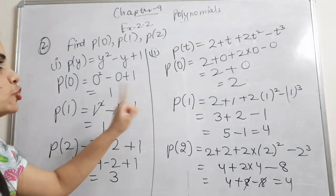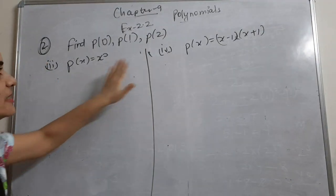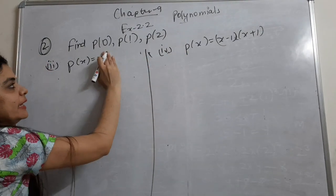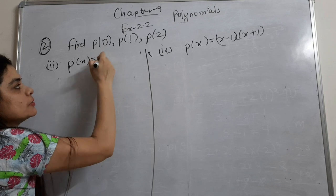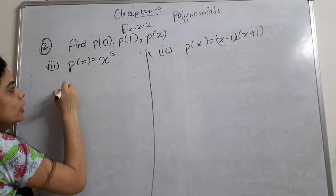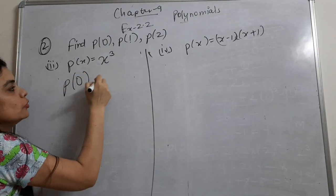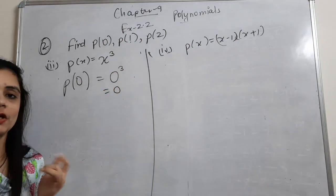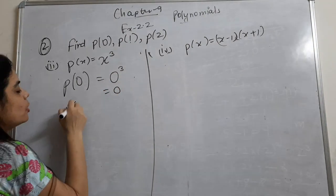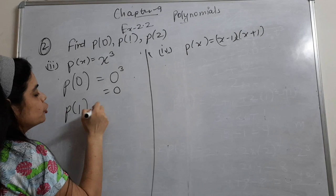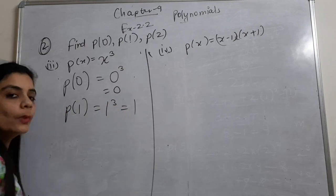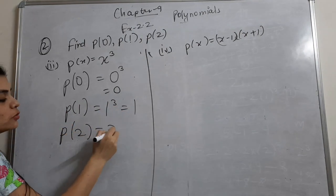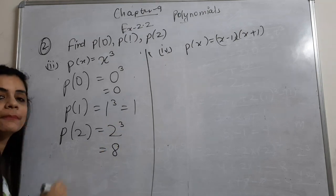Now the third part is p(x) = x³. To find p(0): put 0 to x, so 0. Put x = 1: 1 cubed is 1. If I put x = 2: 2³ is 8. For the fourth part, p(x) = (x-1)(x+1): put x = 0, so 0 minus 1 into 0 plus 1, that is minus 1 into 1, which is minus 1.